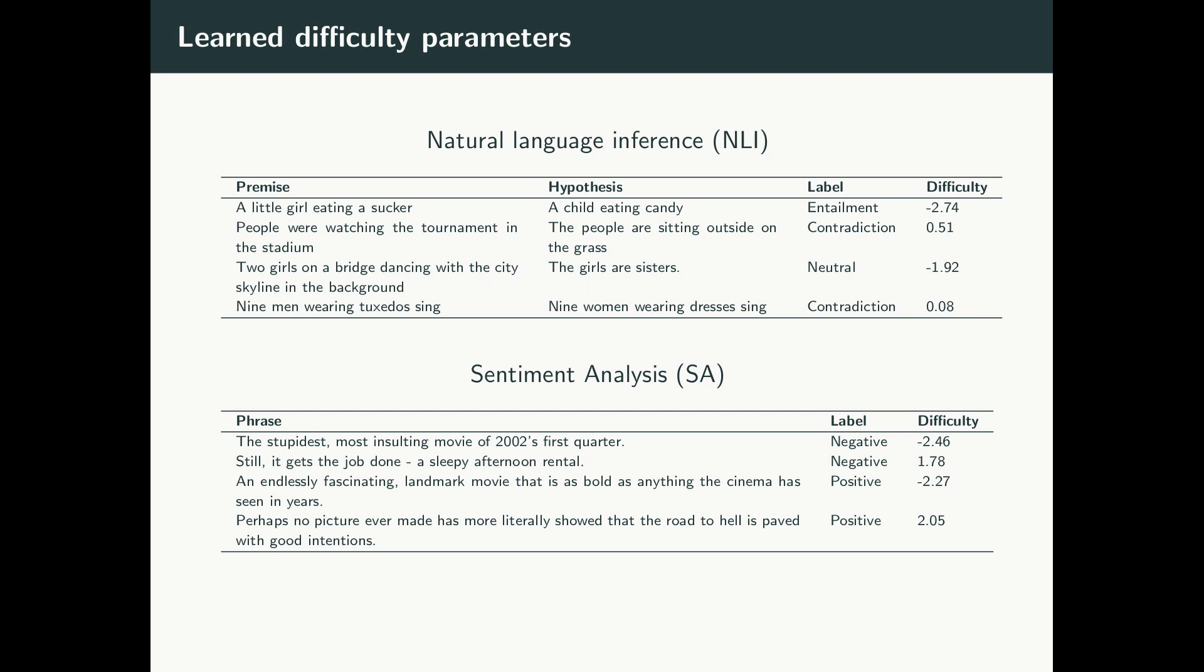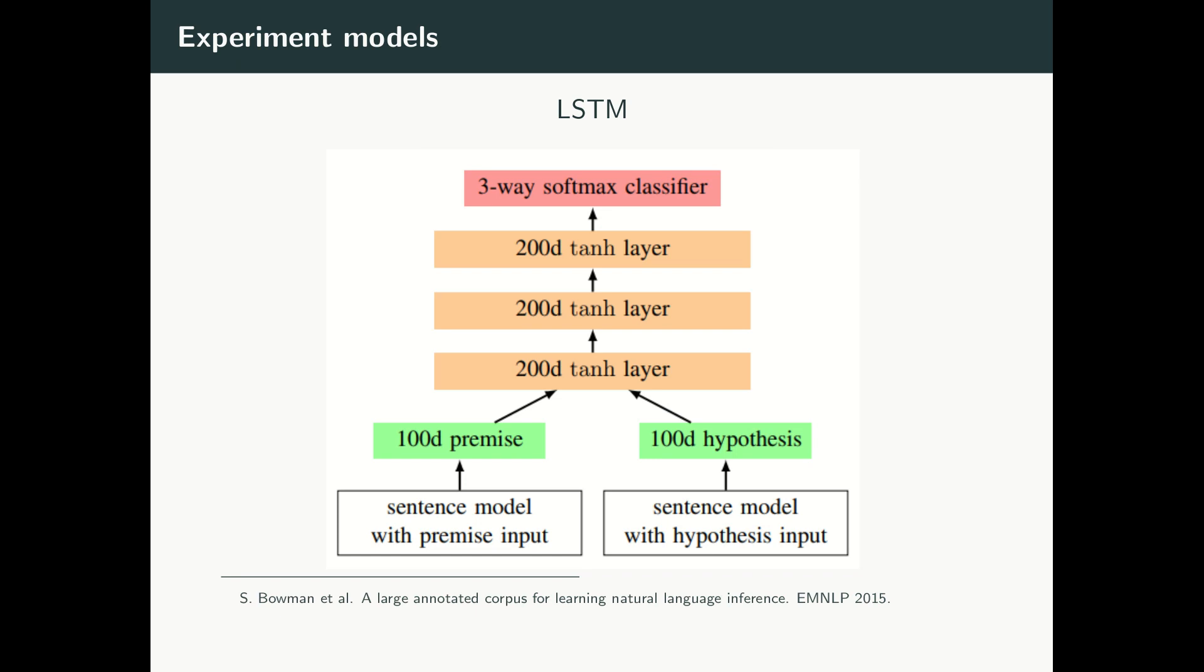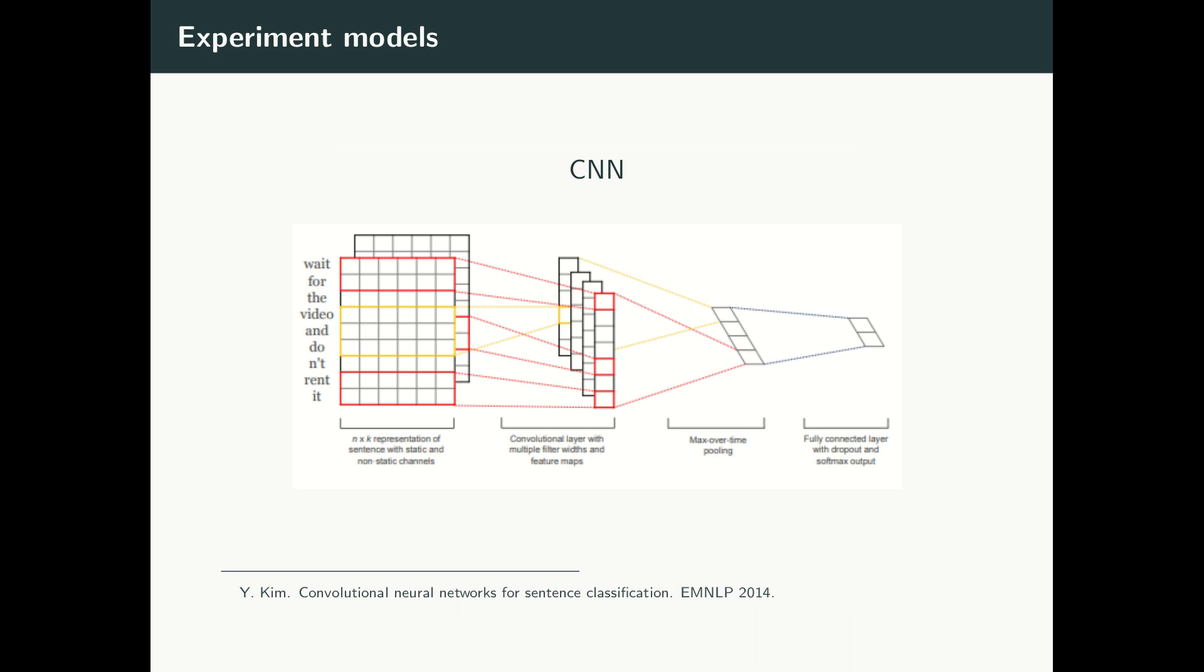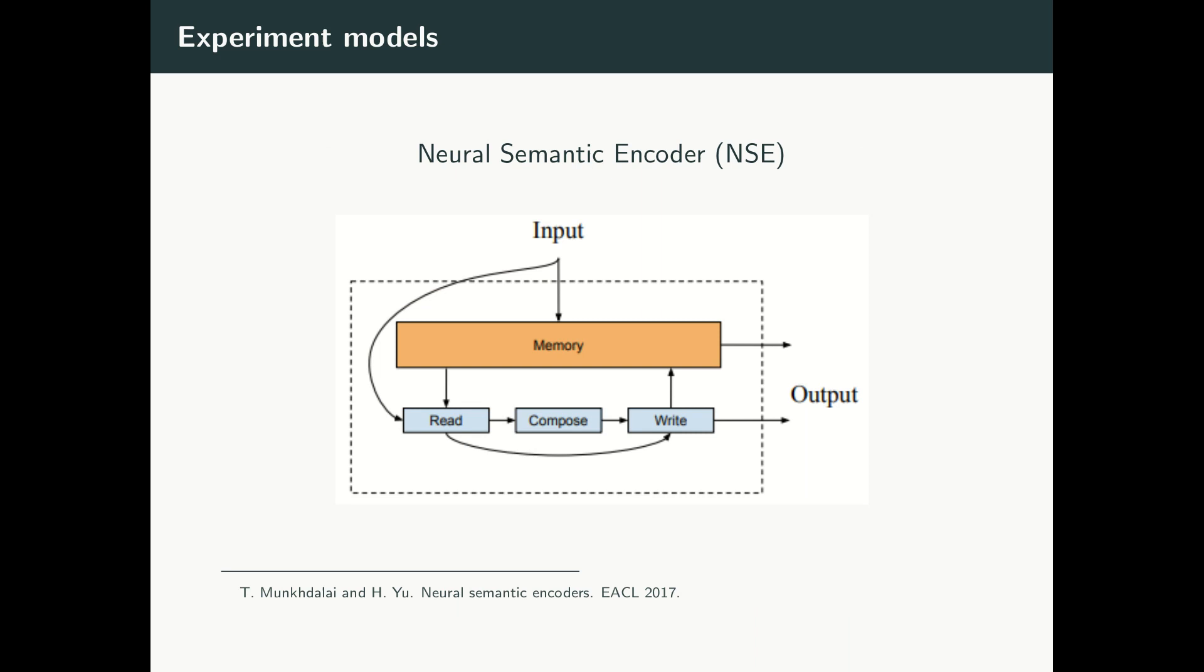For our experiments, we looked at three neural network models. First, we used the LSTM model provided with the original SNLI dataset. Second, we used a convolutional neural network architecture that had been applied effectively to a number of NLP tasks. Finally, we used a neural semantic encoder model, which is a memory augmented neural network that performs well on both the NLI and sentiment analysis tasks.